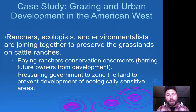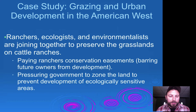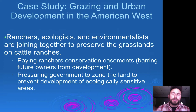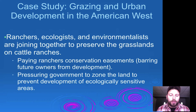Grazing and urban development in the American West is a big issue, but ranchers, ecologists, and environmentalists are joining together to preserve grasslands. We can pay ranchers conservation easements barring future owners from development — we see this on Long Island as well. We can also pressure government to zone land to prevent development of ecologically sensitive rangeland areas.